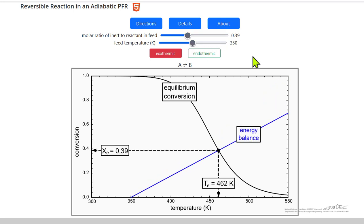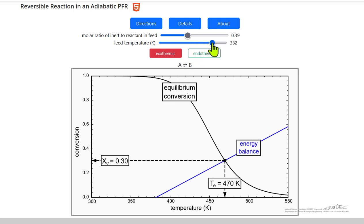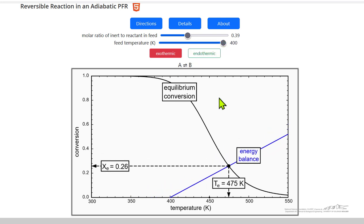As I change the feed temperature, I'm at 350, which is here. If I raise the feed temperature, now 400, of course we've lowered the equilibrium conversion, we've raised the equilibrium temperature.